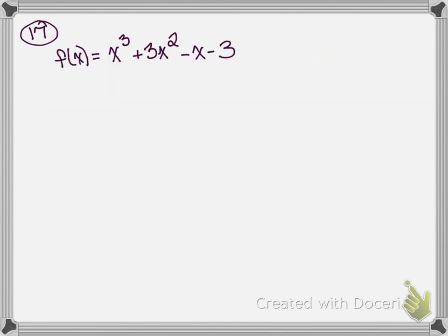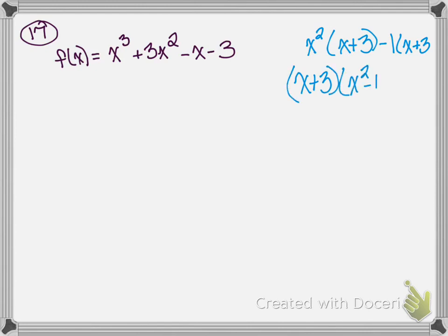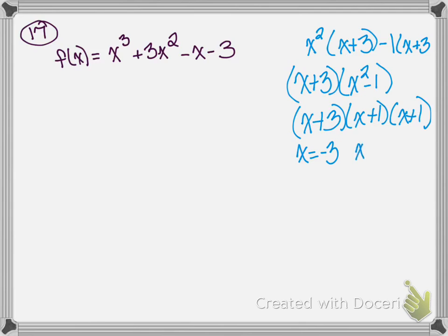Number 17 says: use the rational root theorem to find all rational zeros. When I looked at this one, I saw it actually could be factored. Some students may choose to factor it — you can take x squared times x plus 3, then take a negative 1 out to get x plus 3 and x squared minus 1. X squared minus 1 factors further, so I have x plus 3 times x plus 1 times x minus 1. That gives zeros of x equals negative 3, x equals negative 1, and x equals 1.